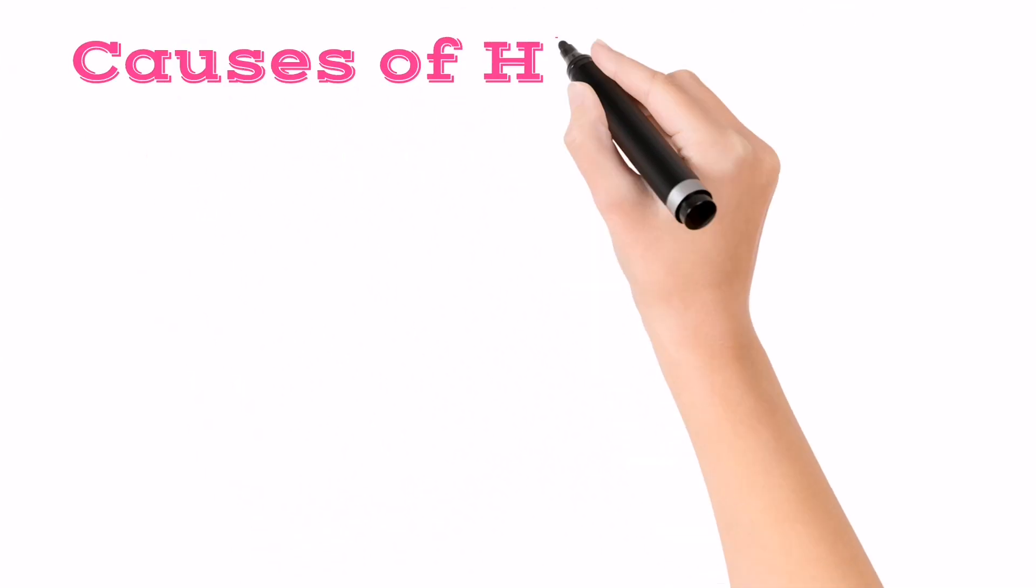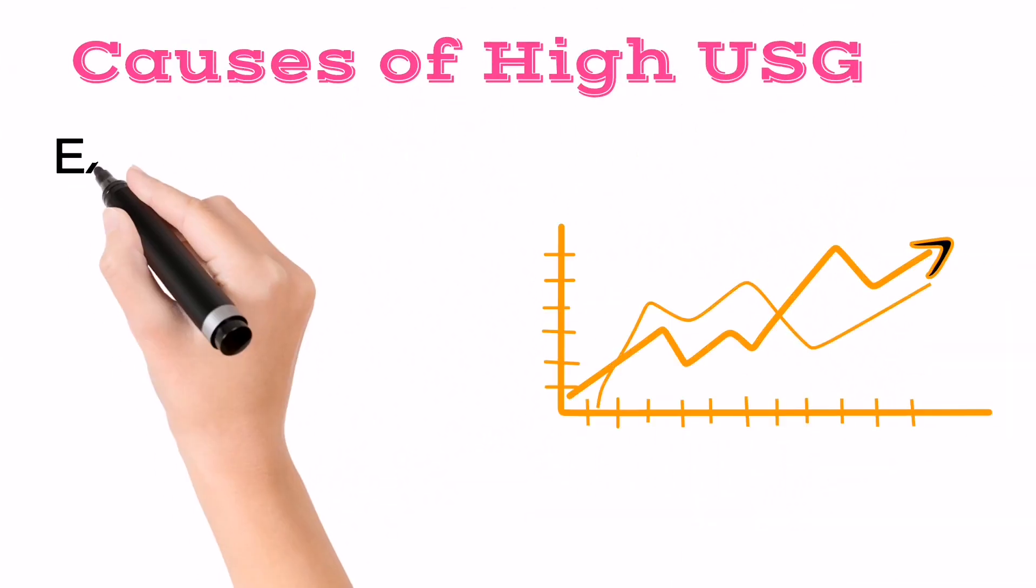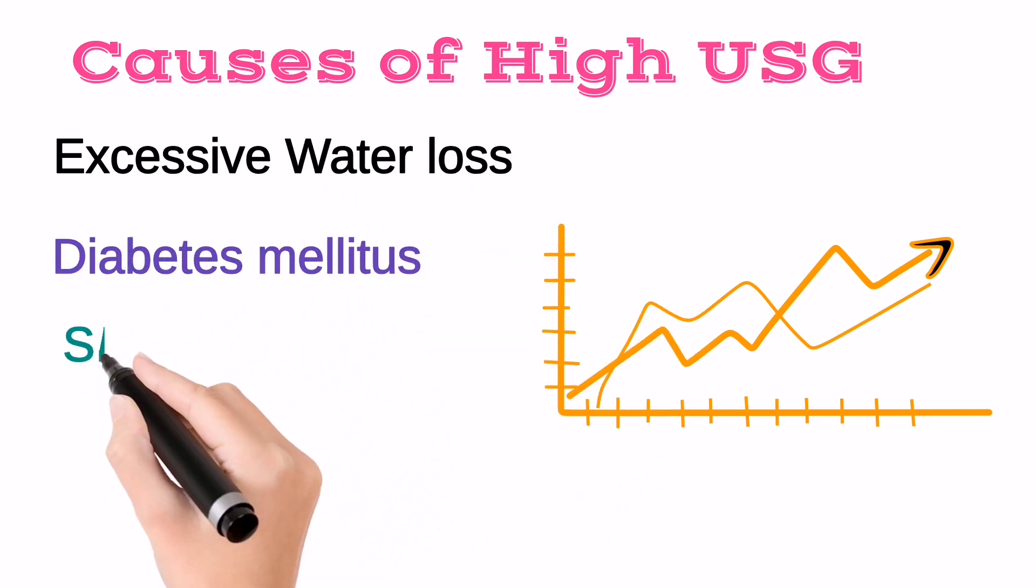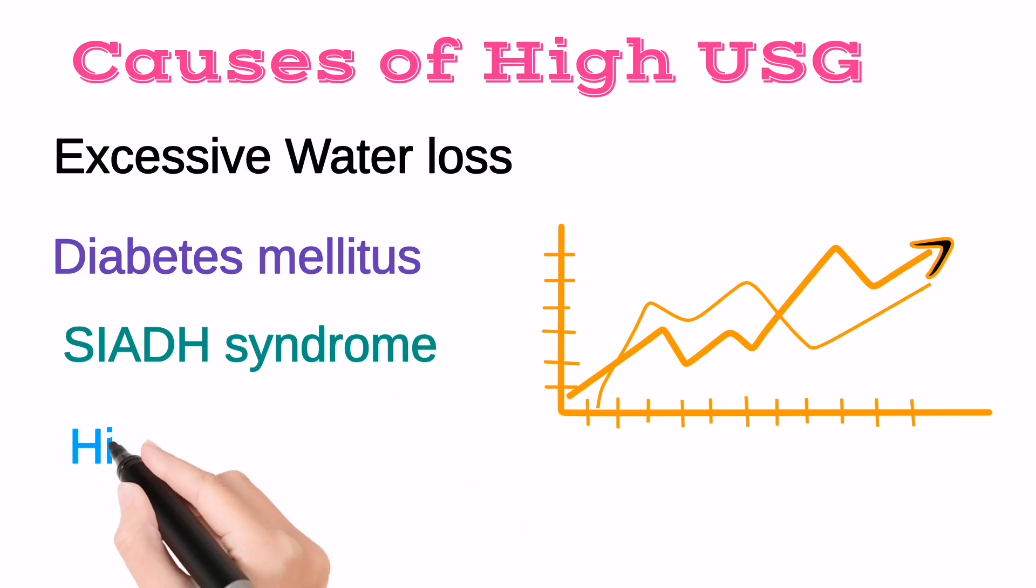The causes of high USG might be excessive water loss, diabetes mellitus, syndrome of insufficiency of antidiuretic hormone, and high sodium level, etc.